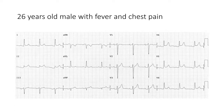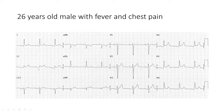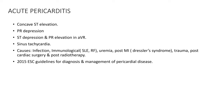Next ECG is from a 26-year-old male with fever and chest pain. Starting with the limb leads, axis is normal. The obvious finding is concave-type ST elevation. The PR segment is depressed, and in AVR the PR segment is elevated and the ST segment is depressed. The ECG is conclusive for acute pericarditis. Findings: concave ST elevation, PR depression in most leads, ST depression and PR elevation in AVR, and sinus tachycardia.